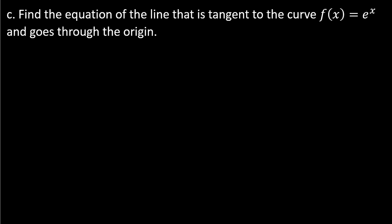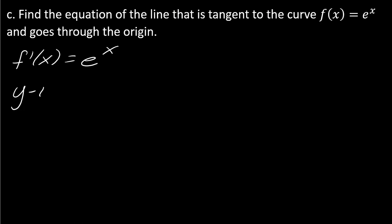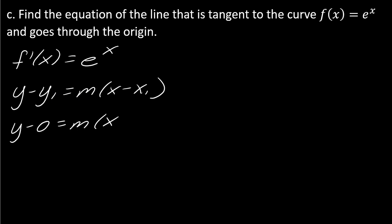Moving on to the last one — this is a tricky question. Find the equation of a line tangent to the curve f of x equals e to the x that goes through the origin. First things first, we take the derivative. This question is tricky because we're told the tangent line goes through the origin. Using point-slope form with the point (0, 0), we get y minus 0 equals m times (x minus 0), so the form of our tangent line is y equals mx, but we need to figure out m.